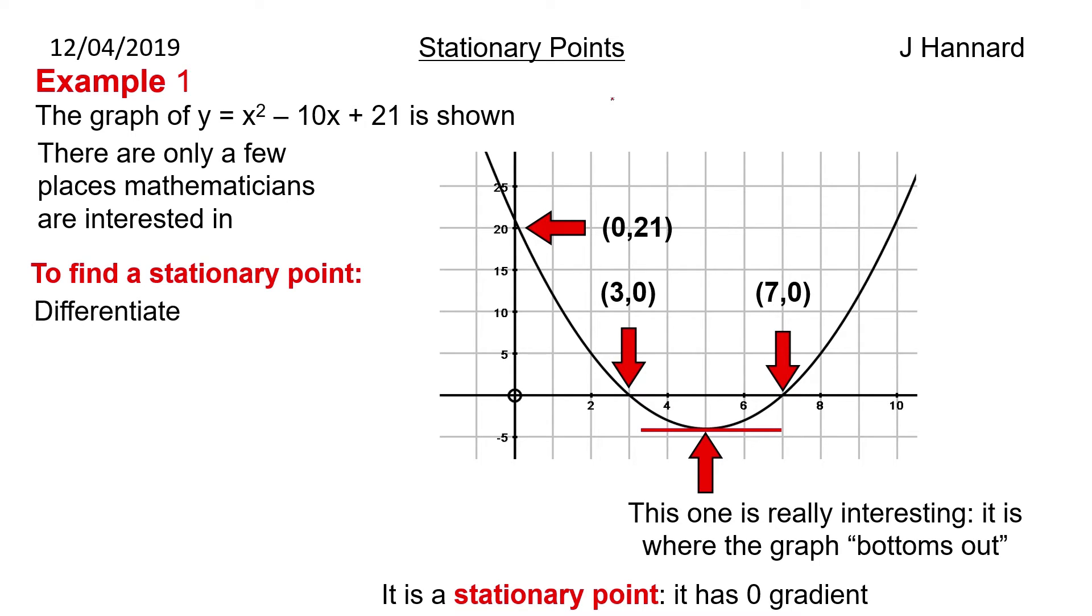So to find the stationary point, what we do is differentiate our original equation. We set it equal to 0 because when we differentiate we are finding the gradient finder and we want a gradient of 0. So we set the gradient finder equal to 0 and solve for x, then we substitute back in for y and work out what that coordinate is.